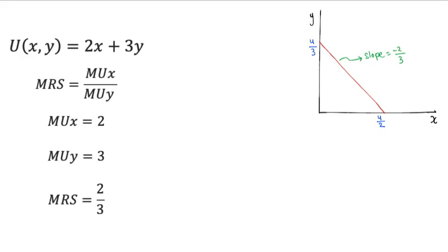This is a summary of our results. Note that the number 2 in the MRS value of two-thirds comes from the coefficient of x in the utility function. The number 3 is from the coefficient of y in the utility function. This is the MRS for any general perfect substitutes utility function.